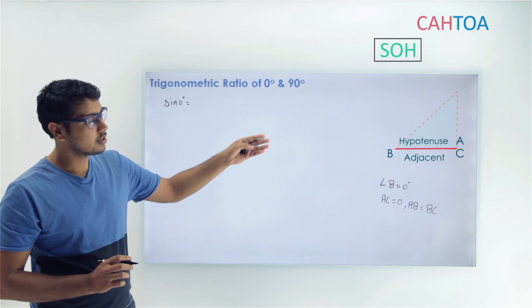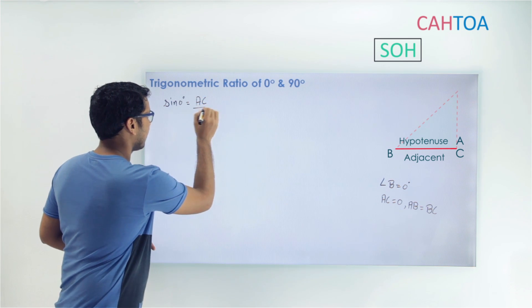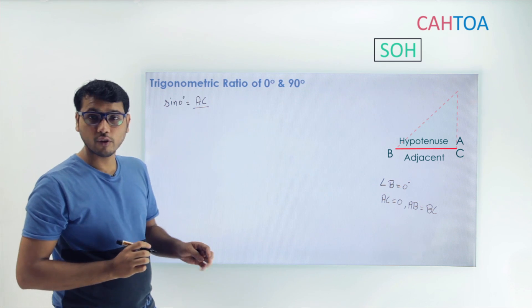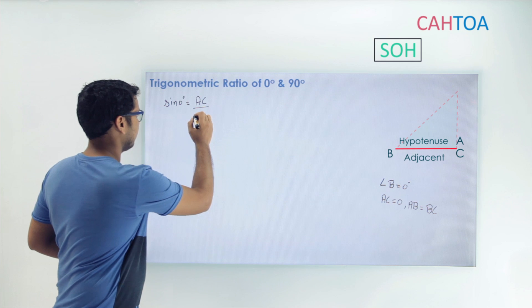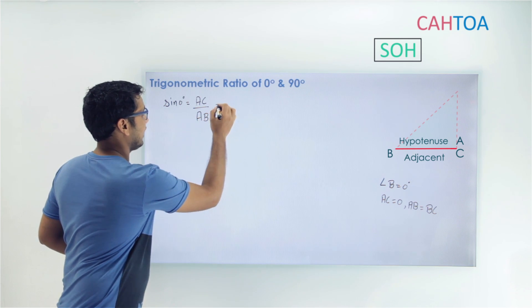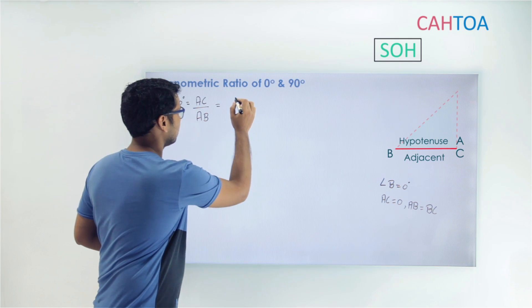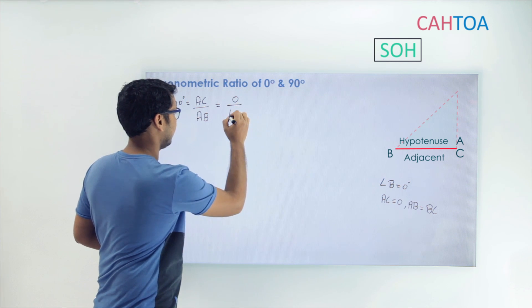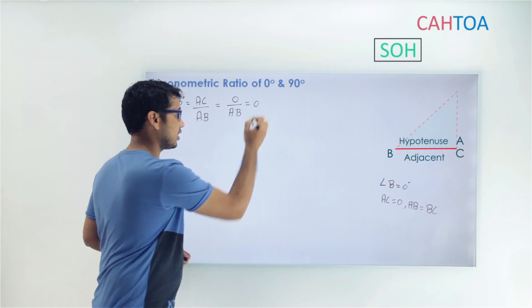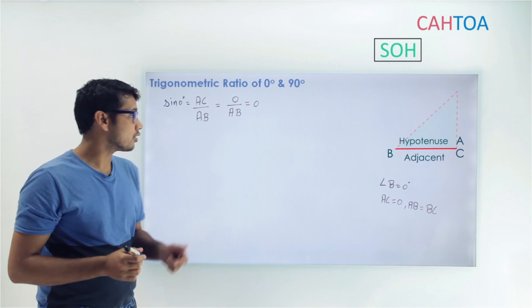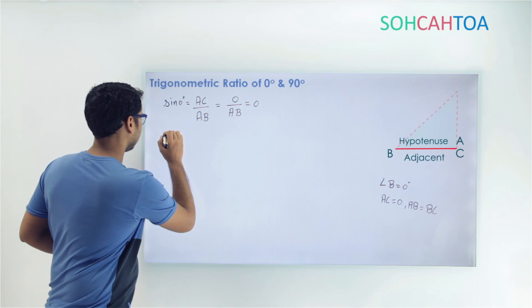So sine of 0 degrees equals AC upon AB. Since AC has become 0, we write 0 upon AB, and its value comes out to be 0. So sine of 0 degrees is 0.